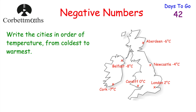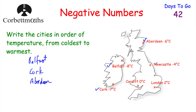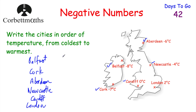In terms of the coldest city, Belfast has a temperature of negative 8 degrees Celsius — that's the coldest. Next coldest is Cork at negative 7 degrees Celsius, then Aberdeen at negative 6 degrees Celsius, then Newcastle at negative 4 degrees Celsius. Cardiff is next at 0 degrees Celsius, and finally London is the warmest at 2 degrees Celsius. So our cities in order from coldest to warmest are: Belfast, Cork, Aberdeen, Newcastle, Cardiff and London. It's important you're able to order numbers including negative numbers.